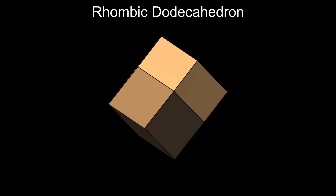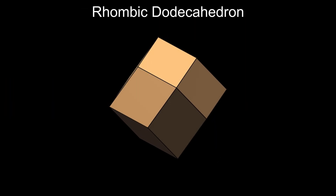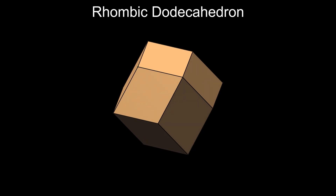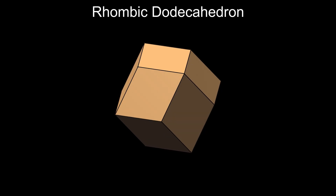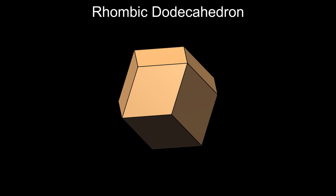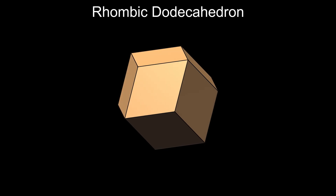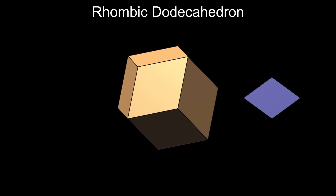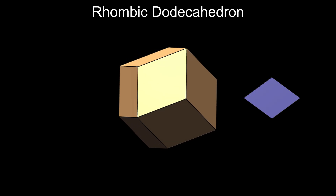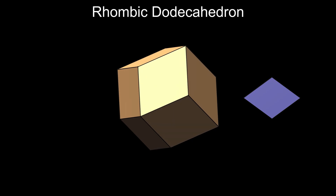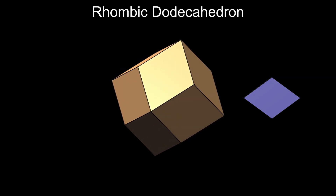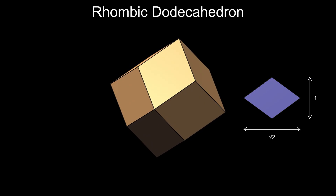The rhombic dodecahedron has 12 identical faces and 14 vertices. Each vertex is surrounded by three or four faces. The faces are rhombuses — four-sided shapes that have equal edge lengths. In this case, the ratio of diagonals is the square root of two.